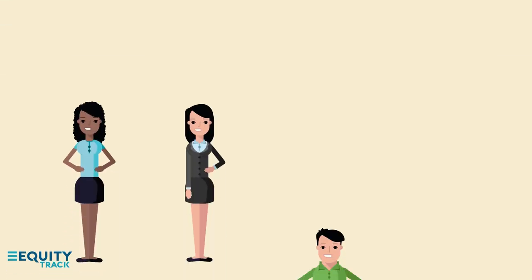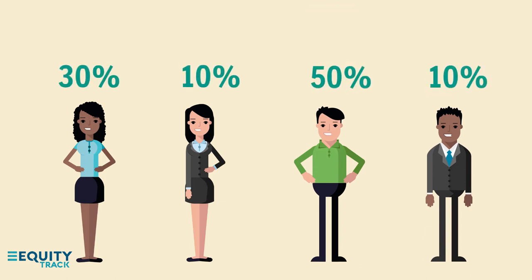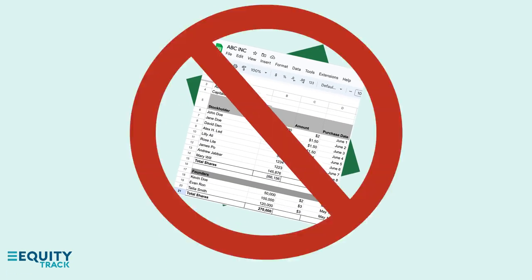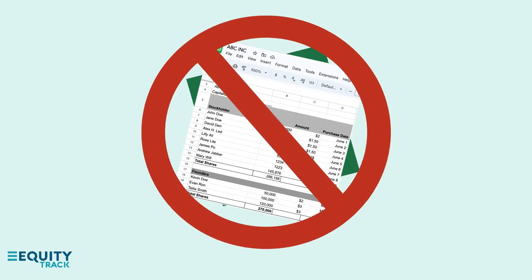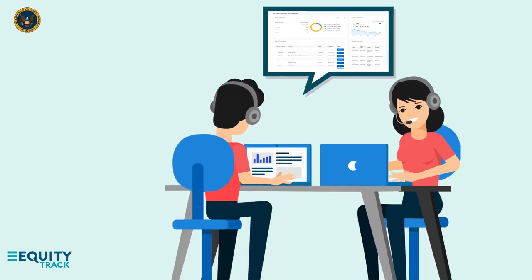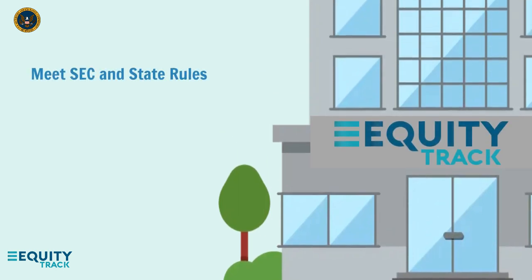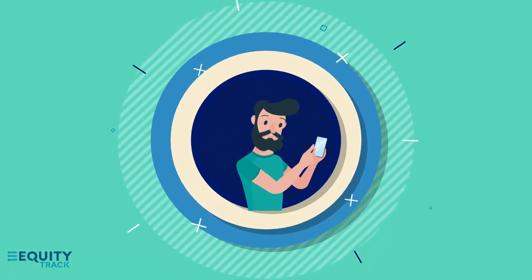Your Cap Table should act as a quick reference sheet, showing you how many shares each person has with a percentage for quick computation, and this should be able to be calculated at any date in history. Thus, using Excel or spreadsheets usually won't cut it. Rather, you should use an SEC-registered stock transfer agent to manage your Cap Table for you, such as Equity Track. They will help you meet SEC and state rules, as well as get the data in the way you need it, so you can make the financial decisions you were born to make.